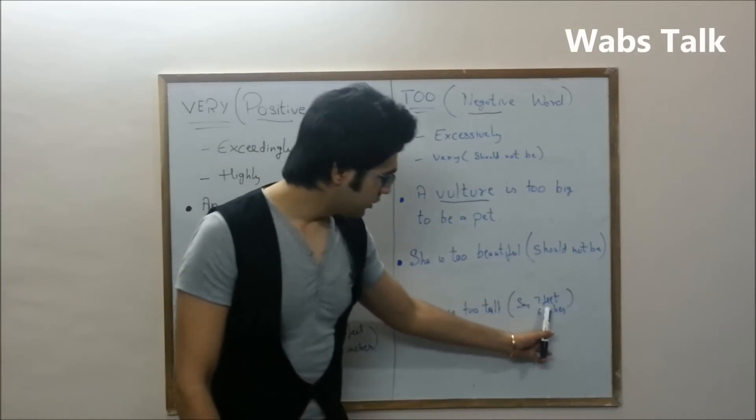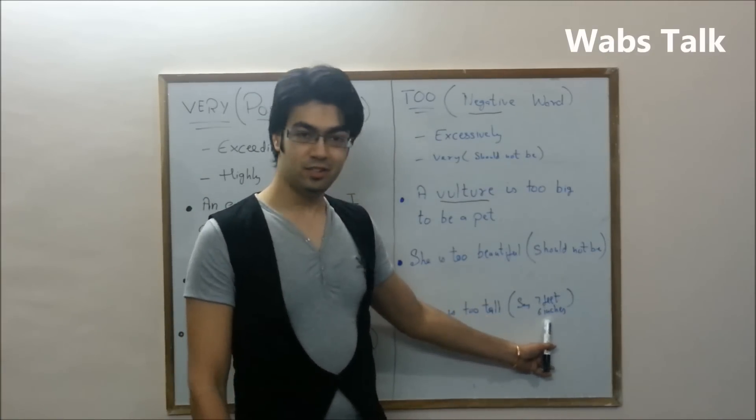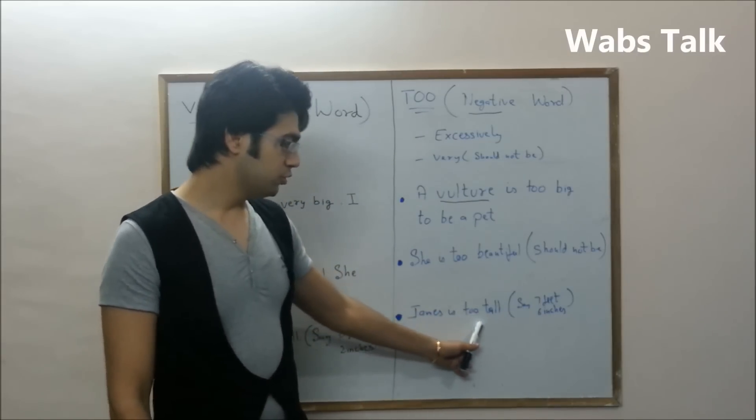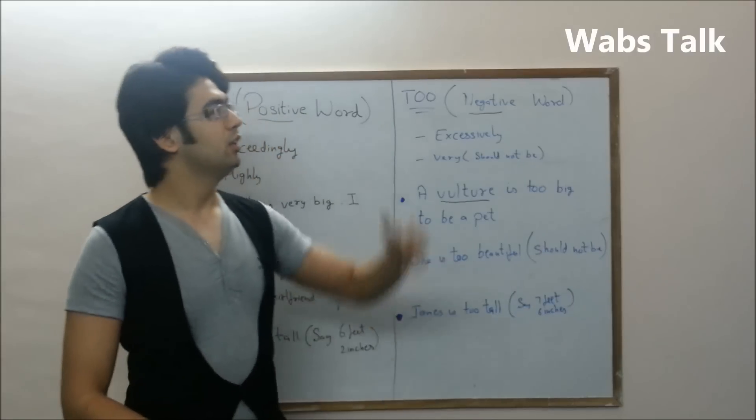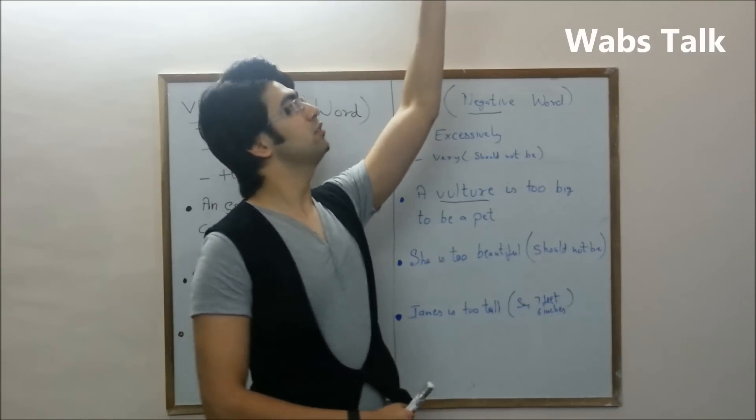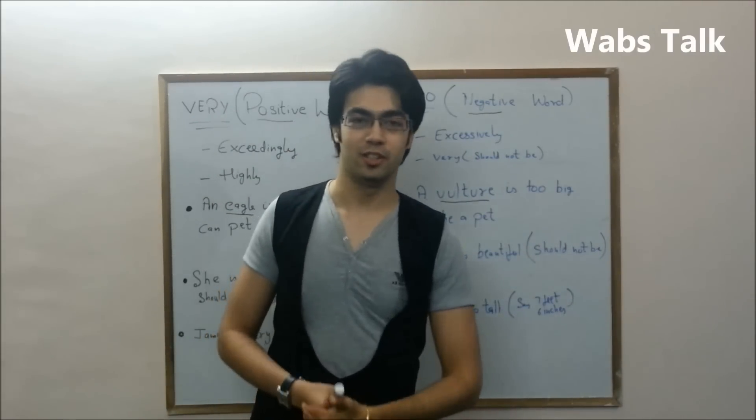But if let's say James is 7 feet 6 inches tall, James is too tall of a person. That's odd. 7 feet 6 inches is odd.